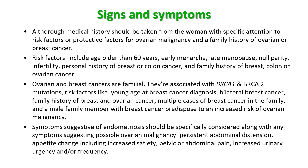There can be symptoms suggestive of endometriosis like dysmenorrhea, dyschezia, and dyspareunia — these should be specifically considered. Other symptoms suggesting possible ovarian malignancy include persistent abdominal distension, appetite change including increased satiety, bloating, pelvic or abdominal pain. And if it is a large mass, it can lead to pressure symptoms like increased urinary urgency or frequency.